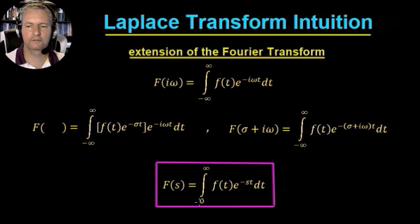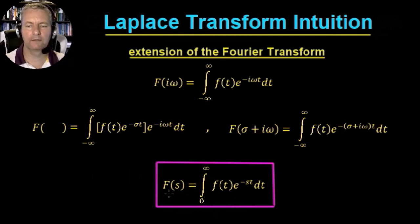We change the lower limit to 0 to make the whole thing causal, because if we're going from minus infinity it wouldn't be causal — we would be having an effect before a cause, and we're dealing with real signals. So the Laplace transform F(s) is given by the integral from 0 to infinity of f(t) e to the minus st dt. That's the equation we're interested in.